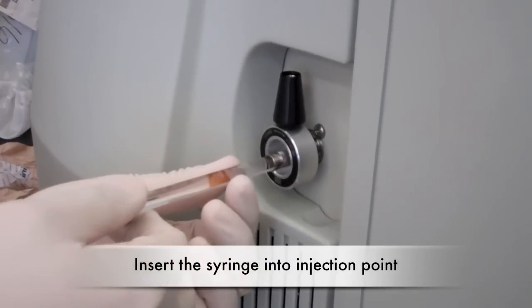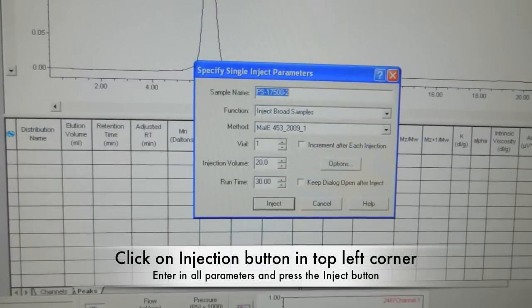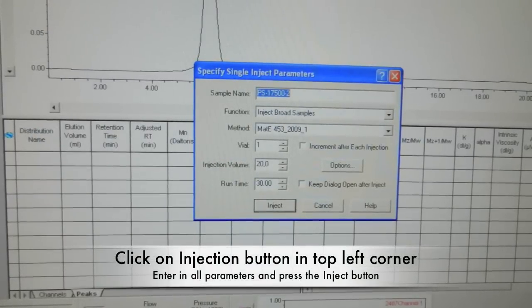Next, put the syringe into the injection point. Click on the injection button in the top left corner in the software and enter in all parameters, including the name of your sample.